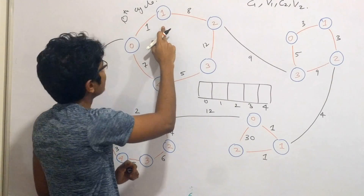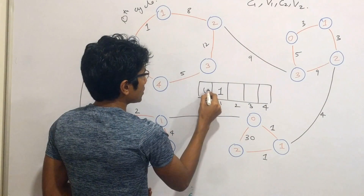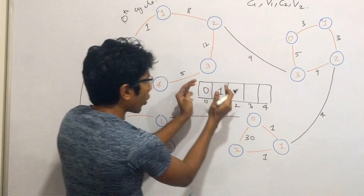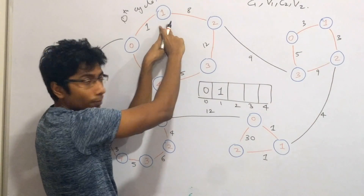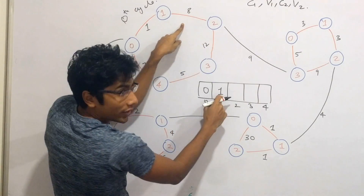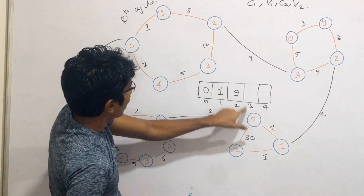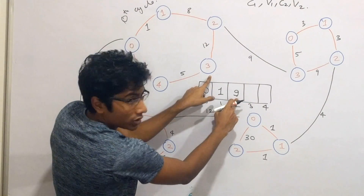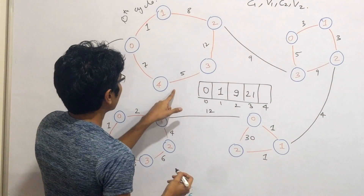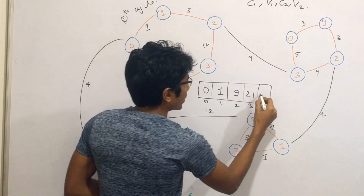From 0 to 0, the distance is initialized to 0. From 0 to 1, the distance is 1. From 0 to 2, it's whatever distance up to the previous point plus the distance from 1 to 2, so 8 plus 1 gives you 9. Similarly, up to index 3, you have the previous distance plus 12, which is 21. And then up to index 4, the clockwise distance is 21 plus 5, which is 26.